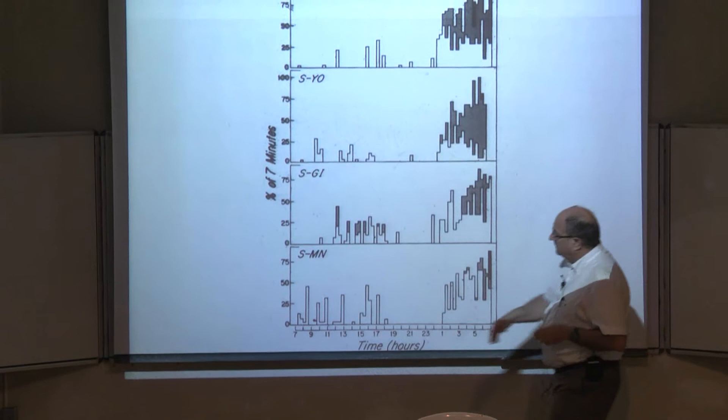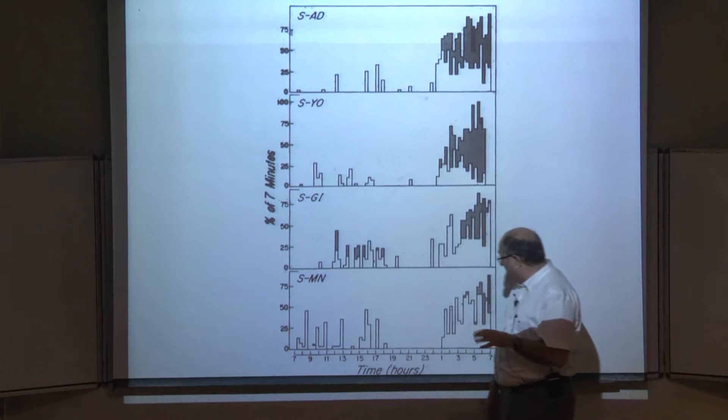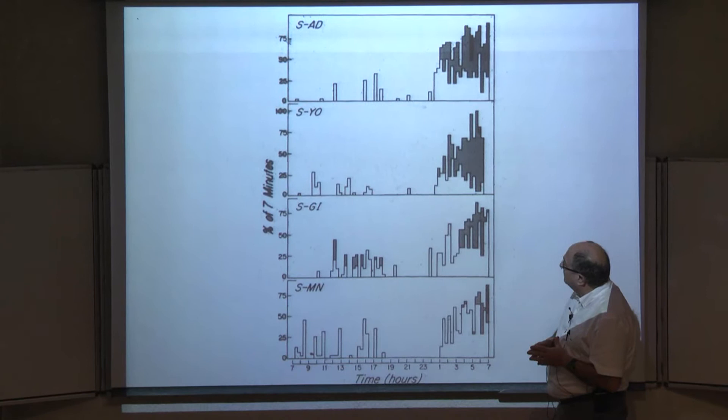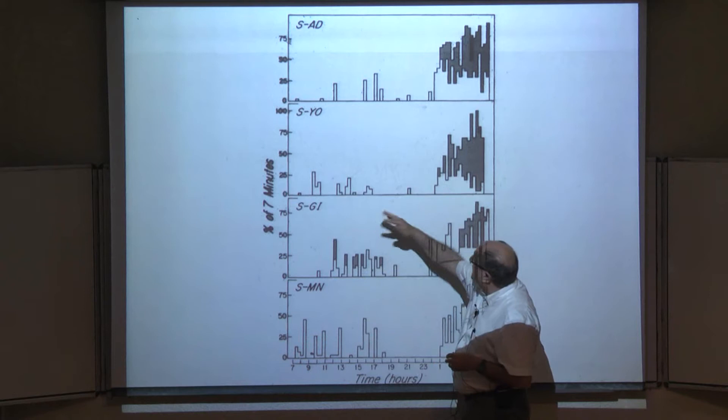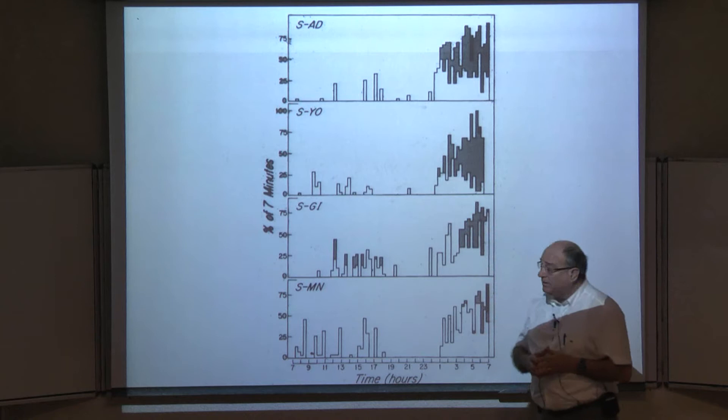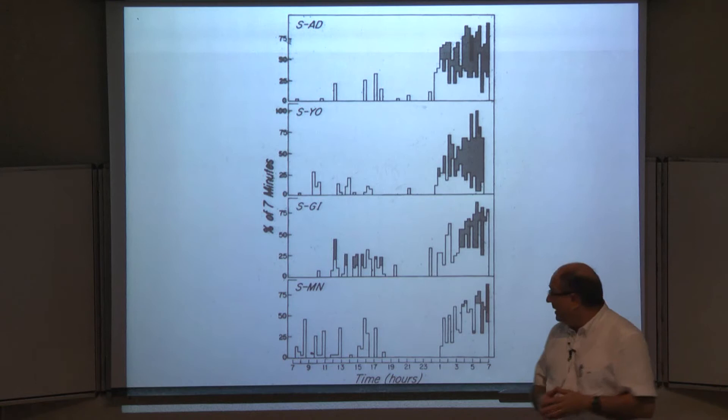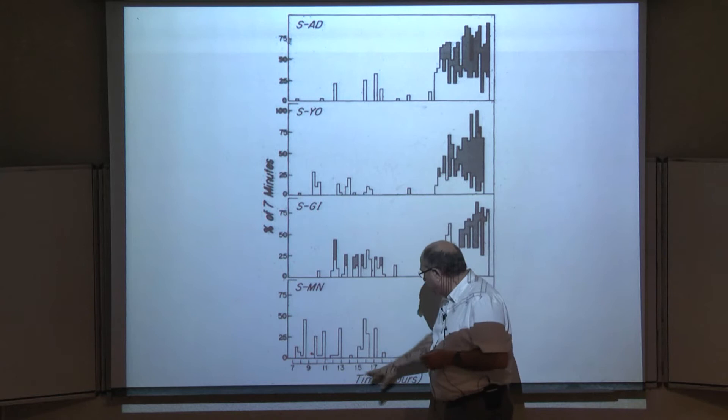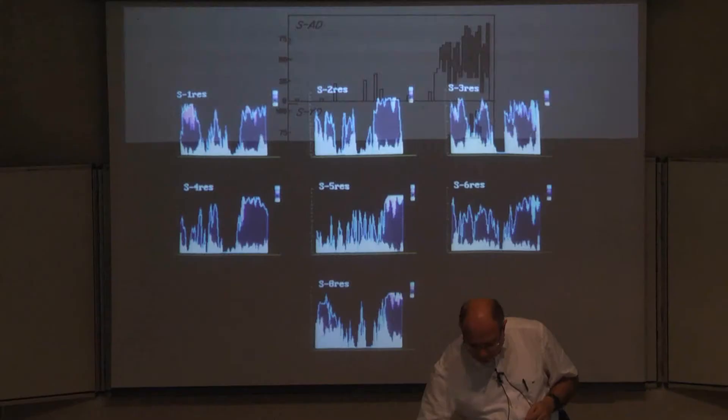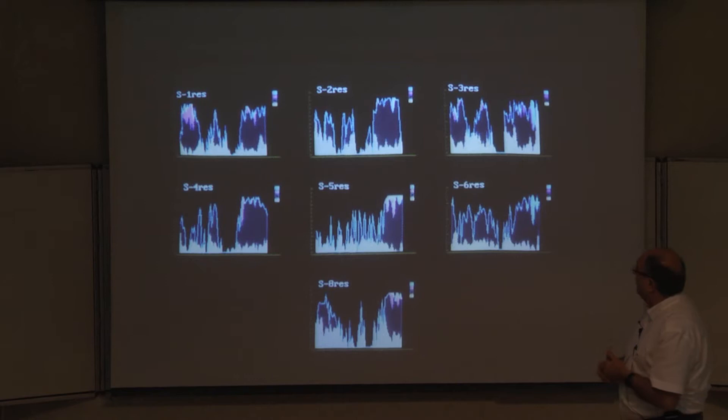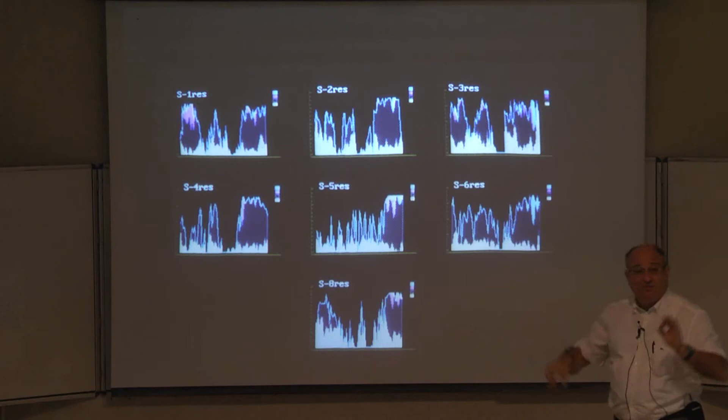Here are the data of four subjects. This is percent of every seven minutes, how much they slept. White bars is very light sleep, dotted is deeper, and this is the deepest part of sleep. You can see during the day after a night of sleep in the laboratory, there is very little sleep. Then sleep starts to accumulate during the evening, reaching in this case the peak at around 5 o'clock in the morning. Interestingly, if you look across subjects, something happened around 3 o'clock to 5 o'clock in the afternoon. There is some accumulation of daytime sleep.